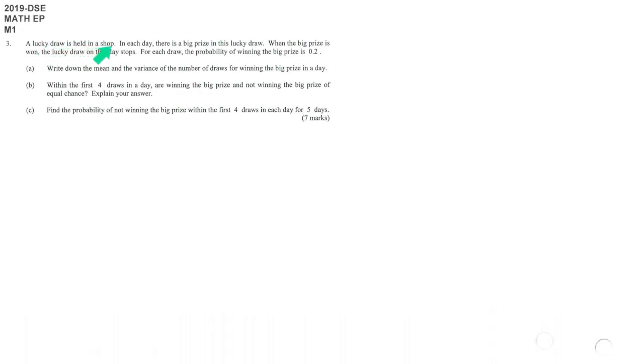A lucky draw is held in a shop. Each day there is a big prize. When the big prize is won, the lucky draw will stop, until the first success appears. This is geometric distribution, so the number of draws is a geometric distribution with parameter p, which is the probability to succeed in each trial: 0.2.